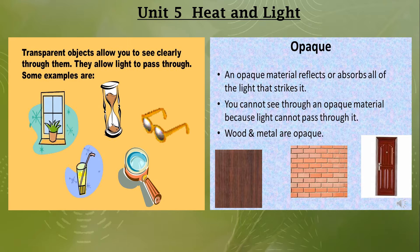On the other hand, there are some objects through which light cannot pass. These objects are called opaque objects. Opaque objects reflect or absorb all the light that strikes them, and you cannot see through them. Examples of opaque objects include wood, cardboard, book, wall, metal, and rubber — objects through which light cannot pass.